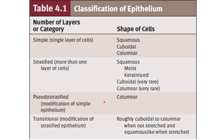Pseudo-stratified epithelium is only of the columnar type. Transitional epithelium is a modification of stratified epithelium. Cells appear cuboidal or columnar when there is little or no urine in the urinary bladder, and become squamous when urine exerts pressure, causing the layers to slip. They are called transitional epithelium because they change shape and cell layer arrangement.